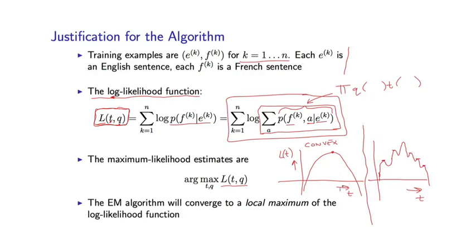Again, these are schematic where I'm showing functions where there's just a single parameter. In reality, these are multi-dimensional functions where I have T and Q might have thousands of parameters. And so these kind of surfaces can become extremely complex with many, many local optima.